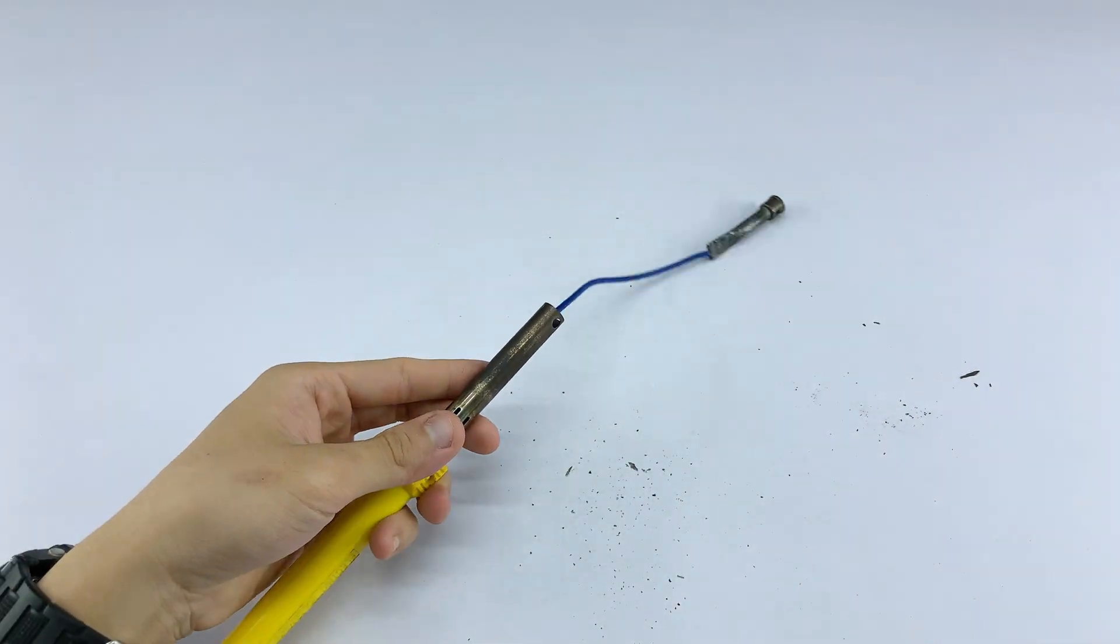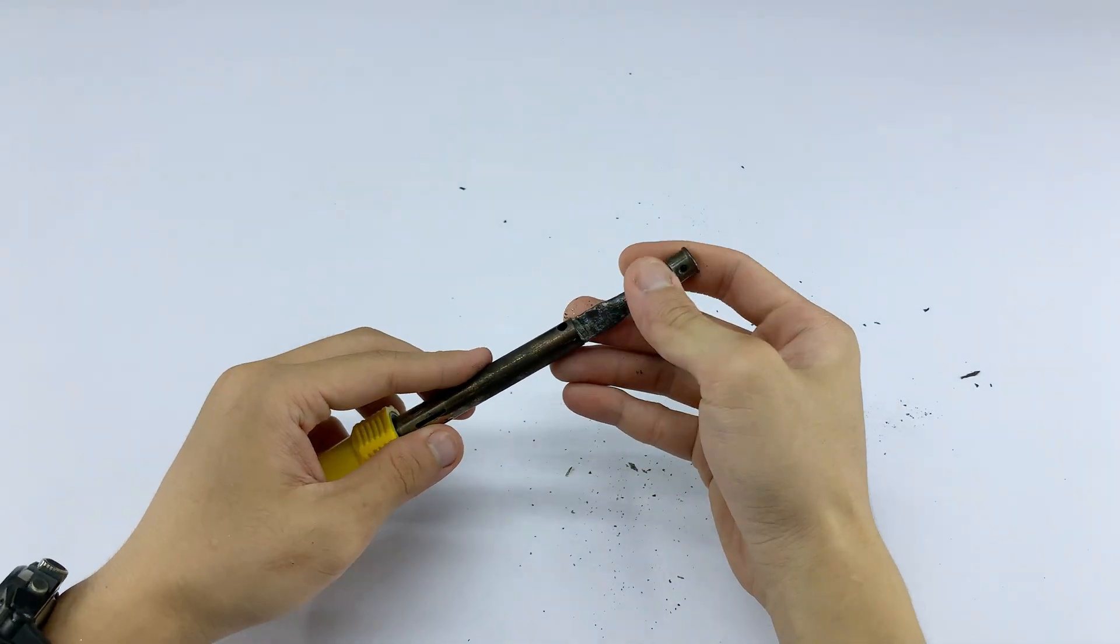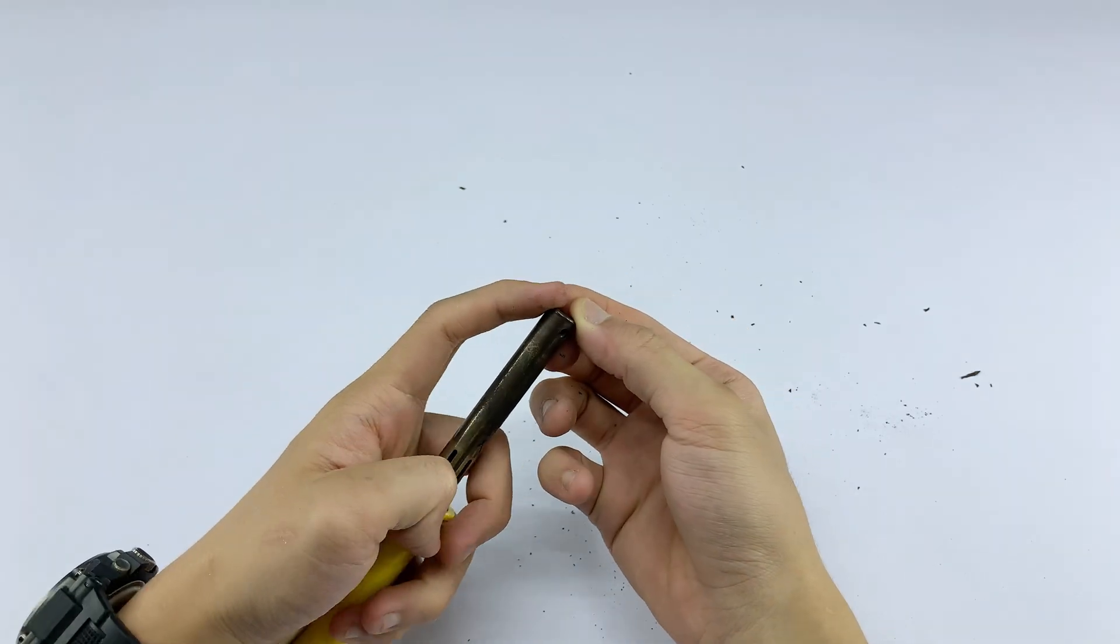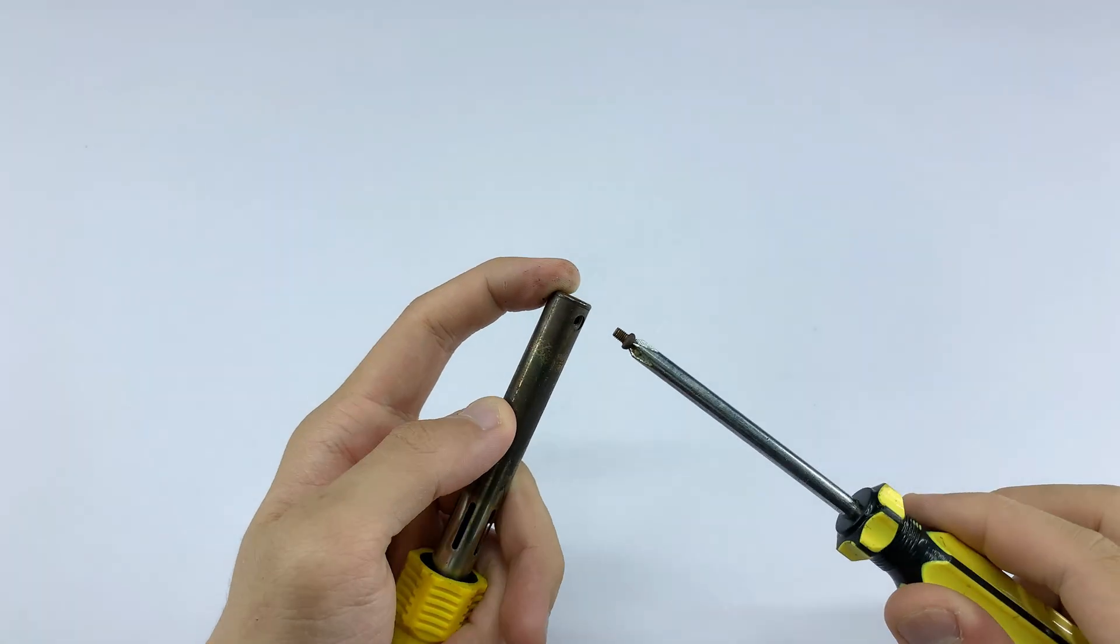With the new wiring in place, I'm ready to reassemble the soldering iron. I'll slide the metal tube and inner components back into the body, then secure the yellow handle with the original screw.